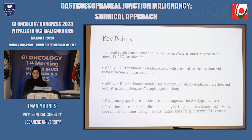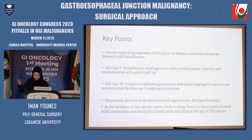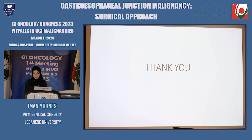To sum up: current surgical management of gastroesophageal cancer in Western countries is based on the Seward AEG classification. A transthoracic esophagectomy with proximal gastric resection and reconstruction with a gastric pull-up is the treatment of choice for AEG type 1, and a transhiatal extended gastrectomy with distal esophageal resection and reconstruction by a Roux-en-Y esophagojejunostomy is favored for type 3. Gastroesophageal junction cancers directly located in the junction — AEG type 2 — are still controversially discussed regarding the optimal surgical approach. As the incidence of this tumor is rising, there is a future need for worldwide cooperation considering the classification and surgical therapy for gastroesophageal junction cancers.